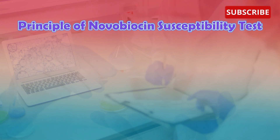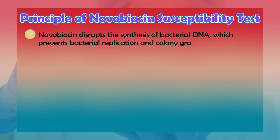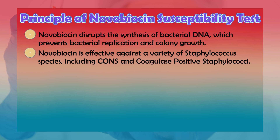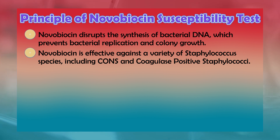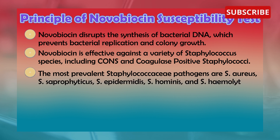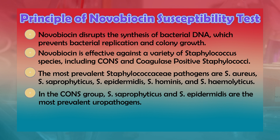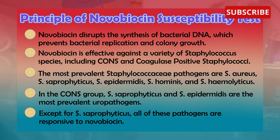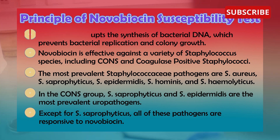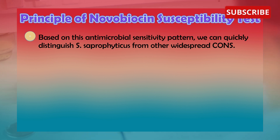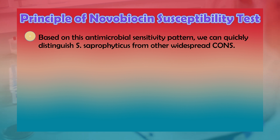The principle of the novobiocin susceptibility test is that novobiocin disrupts the synthesis of bacterial DNA, which prevents bacterial replication and colony growth. Novobiocin is effective against a variety of Staphylococcus species including coagulase-negative and coagulase-positive staphylococci. The most prevalent staphylococci pathogens are Staphylococcus aureus, Staphylococcus saprophyticus, Staphylococcus epidermidis, Staphylococcus haemolyticus, and Staphylococcus hominis. In the coagulase-negative staphylococci group, Staphylococcus saprophyticus and Staphylococcus epidermidis are the most prevalent urine pathogens. Except for Staphylococcus saprophyticus, all of these pathogens are responsive to novobiocin, and based on this antimicrobial sensitivity pattern we can quickly distinguish Staphylococcus saprophyticus from other widespread coagulase-negative staphylococci.